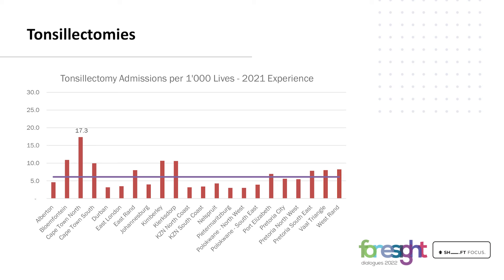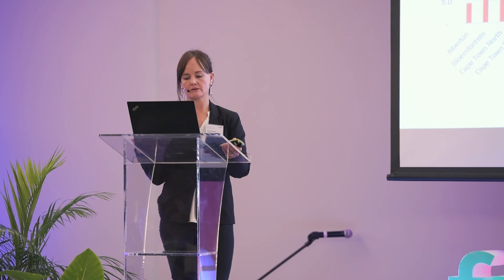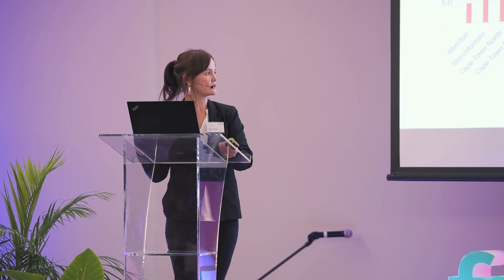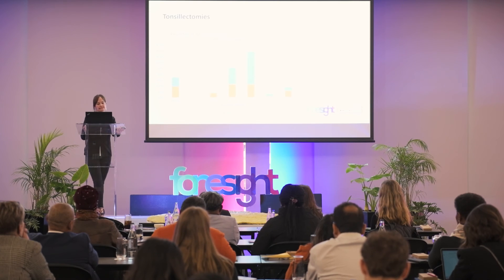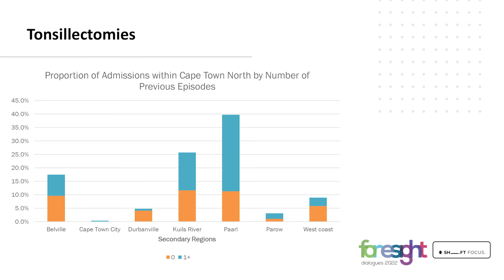This anomalous experience translates into an additional 11.5 admissions per 1,000 lives, and for a scheme of 100,000 lives it amounts to an additional 115 admissions with a cost of about 1.3 million rand. Using our regional definitions, we can analyze admissions per 1,000 lives at a secondary level for Cape Town North, dividing it into secondary regions to give a better idea of where these additional volumes are coming from.